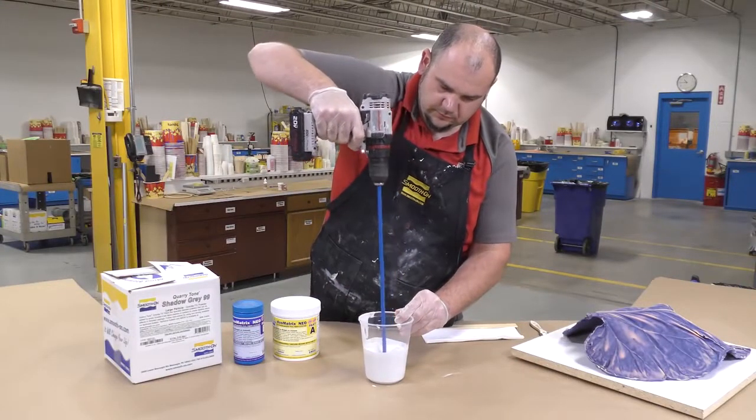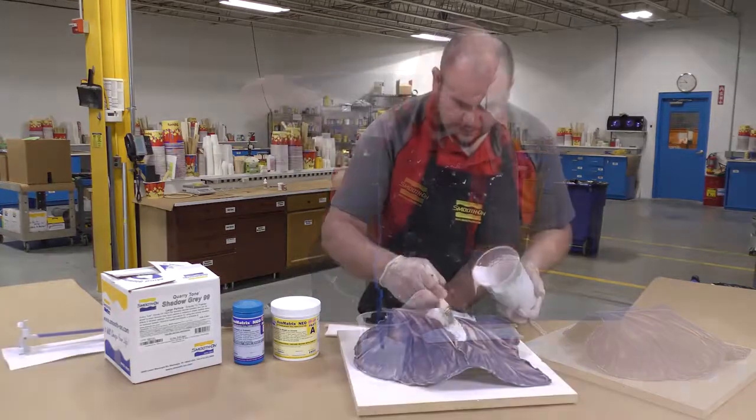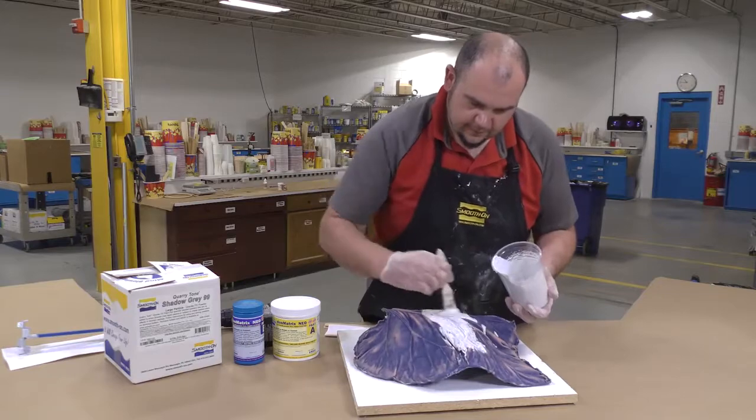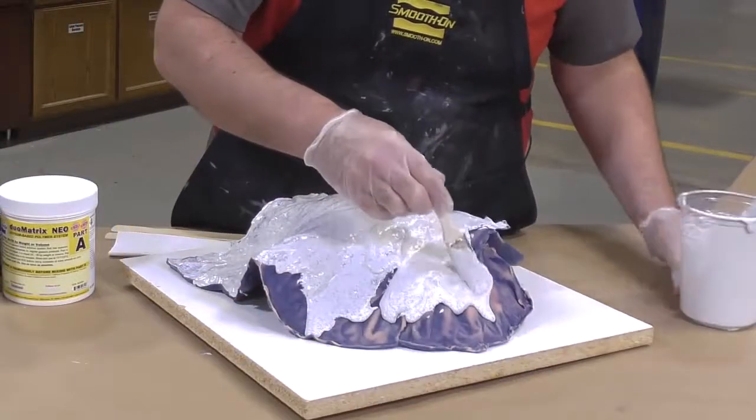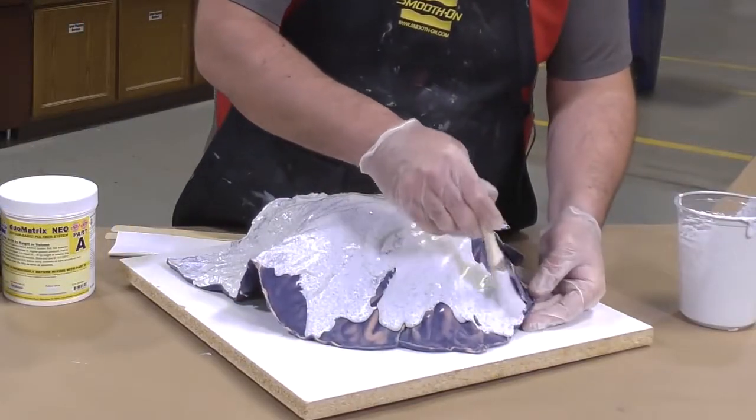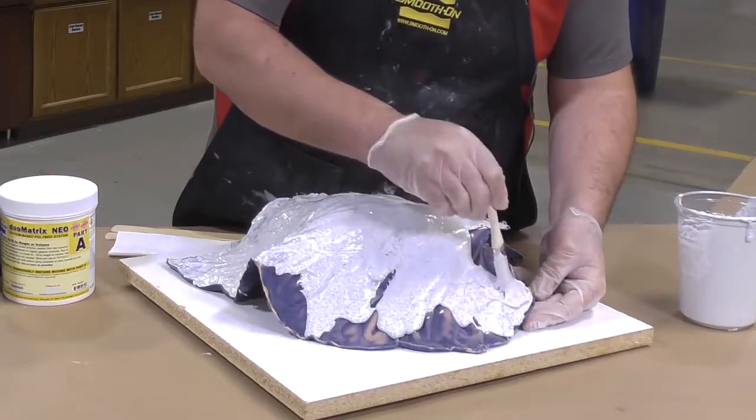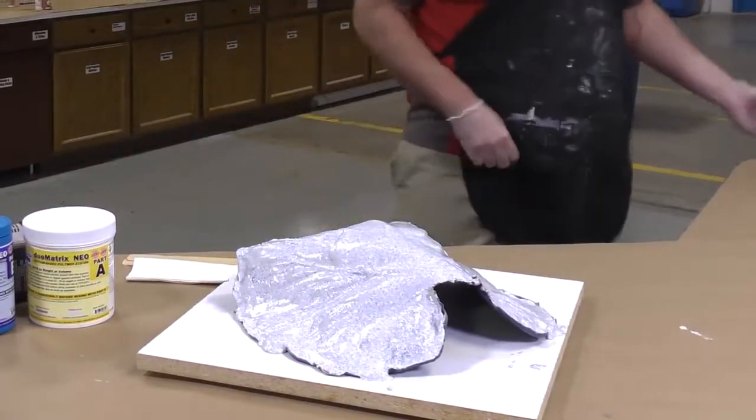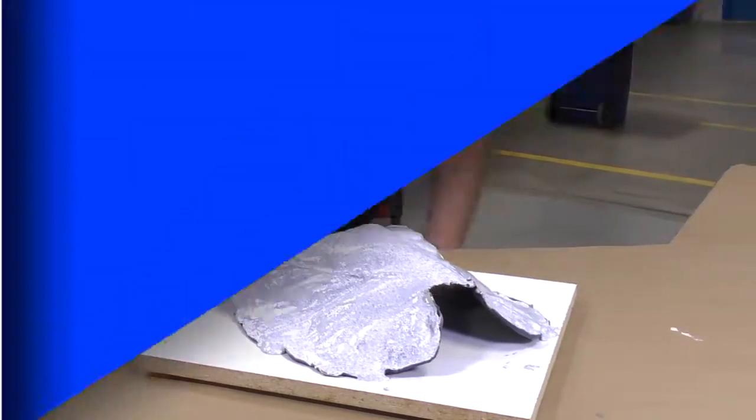The three components are mixed well together using a mechanical mixer. By using this mechanical mixer the pot life of the Duo Matrix Neo will be six minutes and we can achieve a much better blend of the components. The material is allowed a partial cure for 30 minutes before applying the second layer.